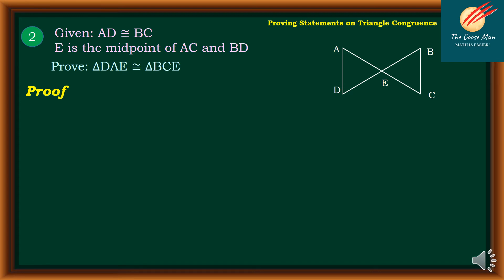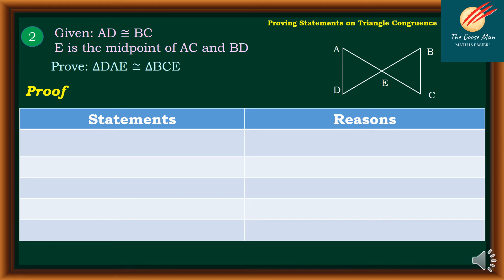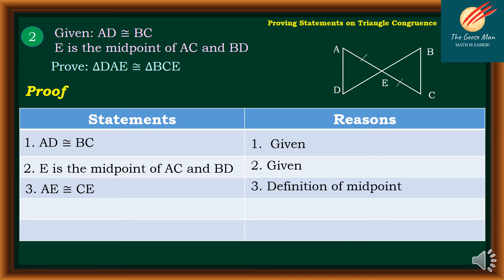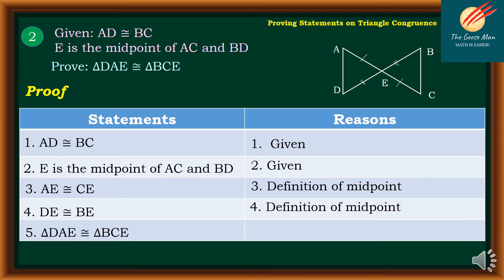For our proof, we will write the two-column form with statements and reasons. Statement one: AD is congruent to BC — reason: given. Statement two: E is the midpoint of AC and BD — reason: given. Statement three: AE is congruent to CE — reason: definition of midpoint. Statement four: DE is congruent to BE — reason: definition of midpoint. Finally, triangle DAE is congruent to triangle BCE — reason: side-side-side postulate.